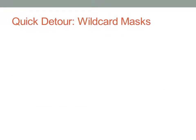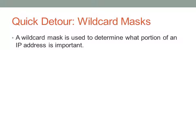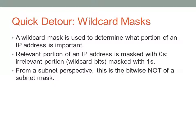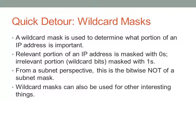Before talking about these access list types, let's take a quick detour and talk about wildcard masks. Wildcard masks are used to determine what portion of an address is important and what portion is unimportant. The relevant portions are marked with zeros and the irrelevant portions are marked with ones. From that perspective, it's a bitwise NOT of a subnet mask — when you write a subnet mask, you put ones in the network portion, but with a wildcard mask, you put ones in the irrelevant portion, which would normally be the host bits.